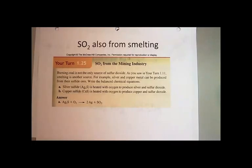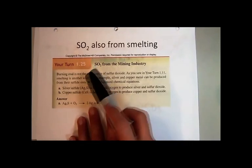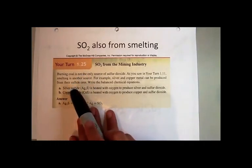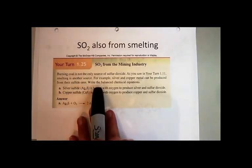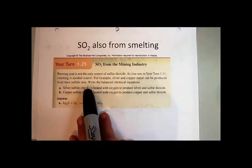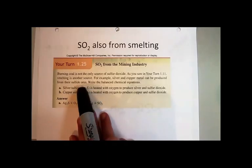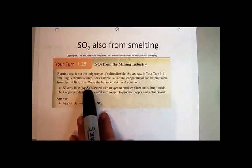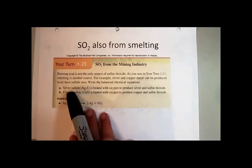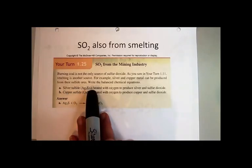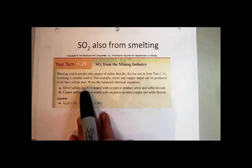What happens is we mine for other minerals, and most elements are not found in nature in their pure elemental form. For example, silver is a metal that we have to go mining for, and you don't just dig in the ground and find big chunks of pure silver. Instead, silver is often found combined with sulfide in the form of silver sulfide.